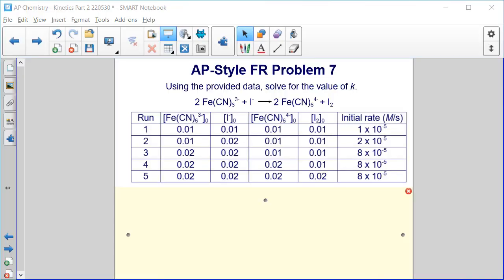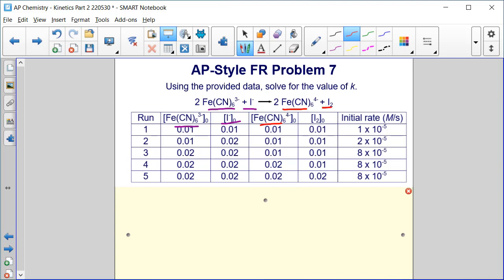AP style free response problem seven. Using the provided data, solve for the value of K. We have a reaction with two reactants and two products. We have some initial concentrations and we measure the initial rate.